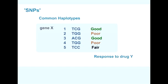For example, if responsiveness to a particular drug Y is affected by a set of SNPs in gene X, and there are five commonly occurring haplotypes, combinations of these SNPs in a population, then two might be associated with good responses, one with moderately good responses, and two with poor responses.